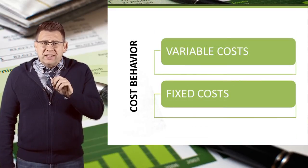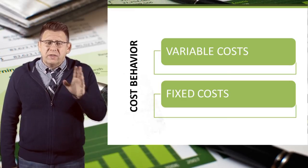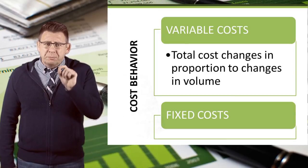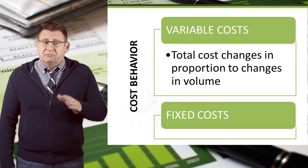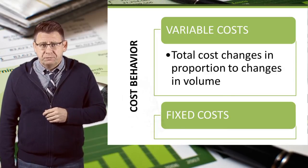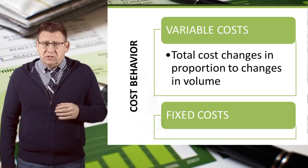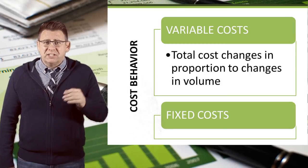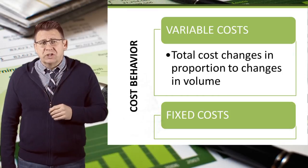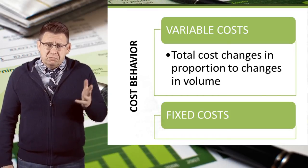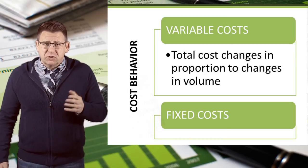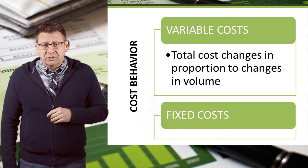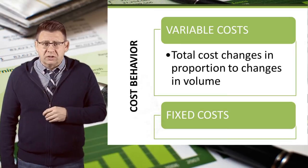There are two ways that costs can behave: they can either be variable or they can be fixed. Variable costs change in total in direct proportion to changes in volume — as volume increases, total cost increases. For example, McDonald's has many variable costs, one being the cost of hamburger patties. As more hamburgers are sold, more patties are used. Sell one hamburger and patties cost a dollar; sell two and the cost is two dollars; sell a hundred and the cost is a hundred dollars.